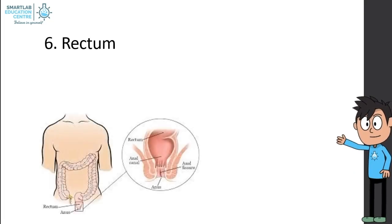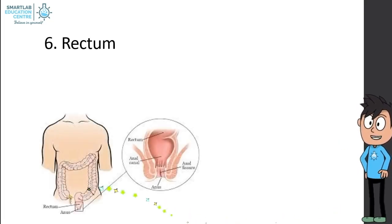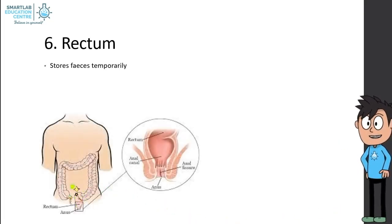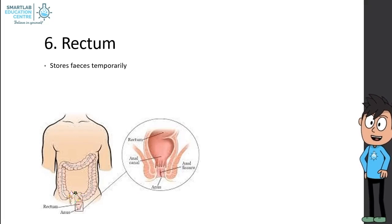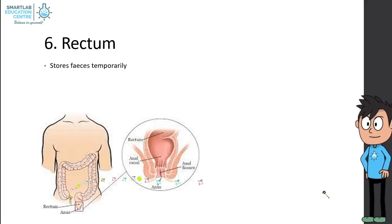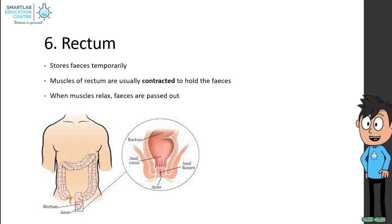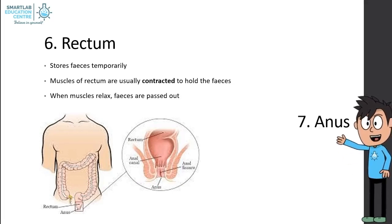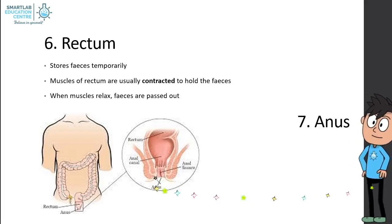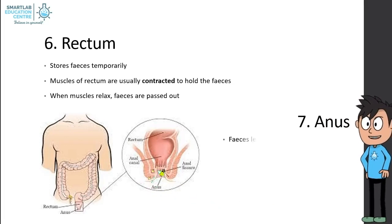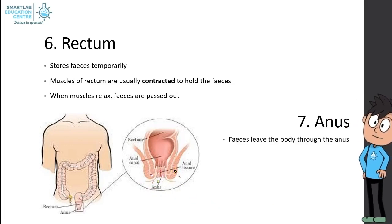The rectum is found at the endpoint of the large intestine. Feces are temporarily stored here. The muscles of the rectum are usually contracted to hold the feces; when the muscles relax, feces are passed out. Finally, the anus is where feces leave the body.